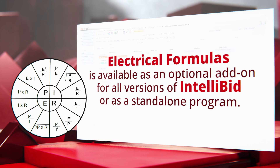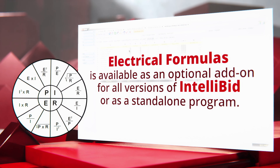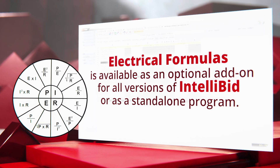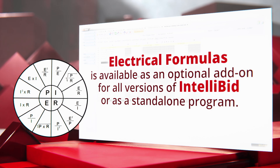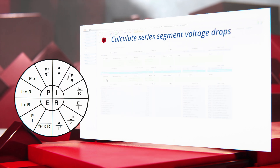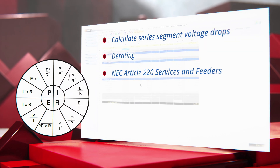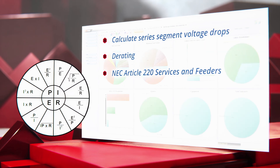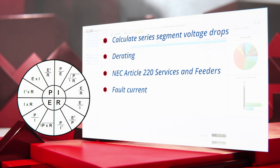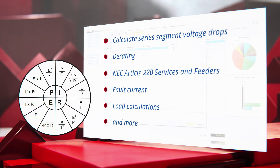Electrical Formulas is available as an optional add-on for all versions of IntelliBID or as a standalone program. Calculate series segment voltage drops, D-rating, NEC article 220 services and feeders, fault current, load calculations, and more.